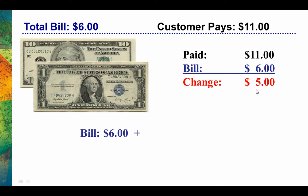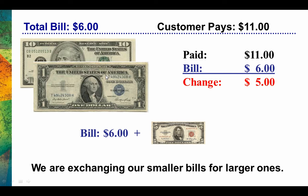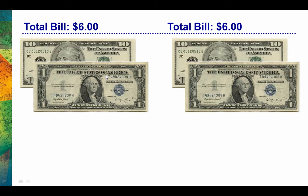So in this particular situation, using the countback method, we would say, your bill was $6, plus 5 would be $11 — and $11 is what they paid originally. What we're really doing is just exchanging our smaller bills for larger ones, and you'll be able to see that more easily on the next slide.